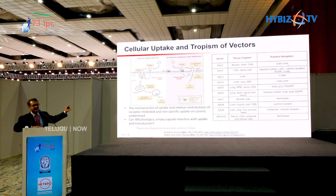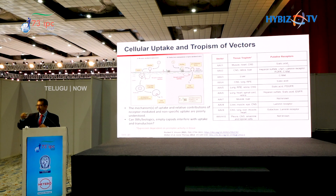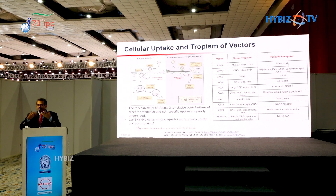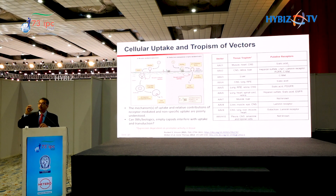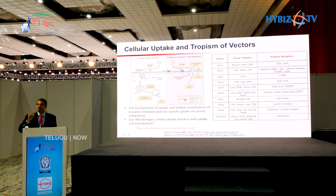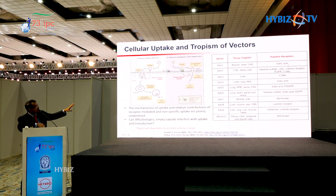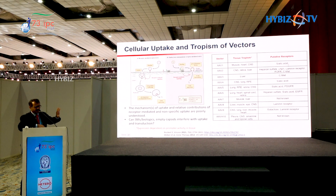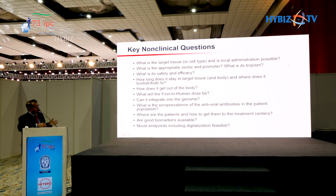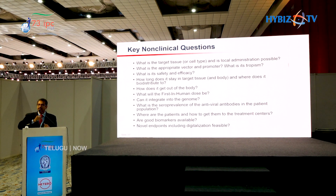Not all viruses infect all species — they are specific, infecting only certain animals and within those animals only certain organs. A cold virus, the Zika virus infecting only the brain, and the rabies virus all have tropism or affinity to certain organs and specific cell types within them. Based on that tropism, we pick the right viral vector. For example, AAV1 affects muscle, heart, and brain, whereas AAV2 also infects the brain, retina, and liver. Picking the right viral vector based on its tissue tropism is critical.